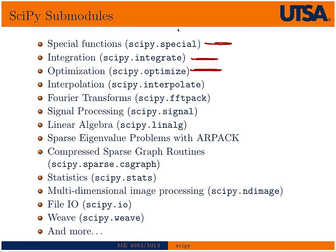Interpolation is for interpolating polynomials or data. Fourier transforms, just what it sounds like. Signal processing is where you'd find your filters, such as Chebyshev filters. Linear algebra is where you'll find all your typical linear algebra — eigenvalues and things like that. If you have very large sparse arrays, you can get performance gains by using the sparse data structures to find eigenvalues or solve linear systems of very sparse equations. There are also sparse graph routines.